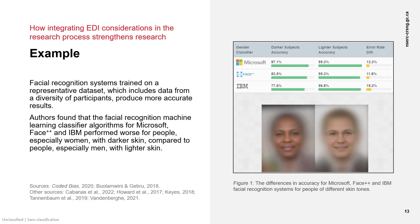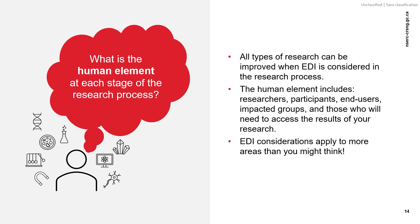By ensuring the dataset is inclusive of the diversity of the population, facial, voice, and skin recognition systems generate more accurate results with wider applicability and reproducibility. Having complete, relevant, and reliable datasets also mitigates the risks of knowledge gaps and unfounded assumptions. All types of research can be improved when EDI is considered in the research process, regardless of discipline. It helps to think of the human element in all the different stages of research — after all, science and engineering are not done in isolation, free of implicit biases, values, and contexts.